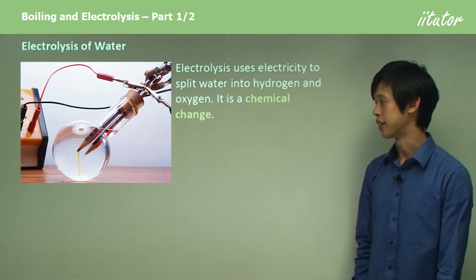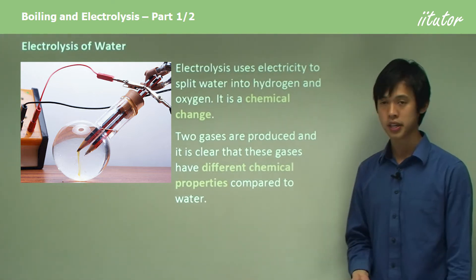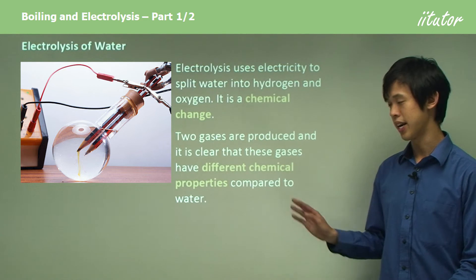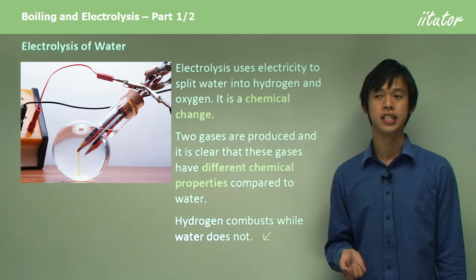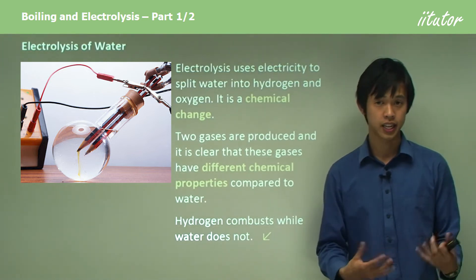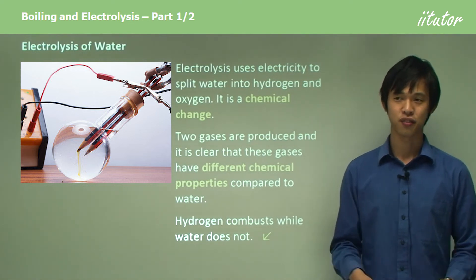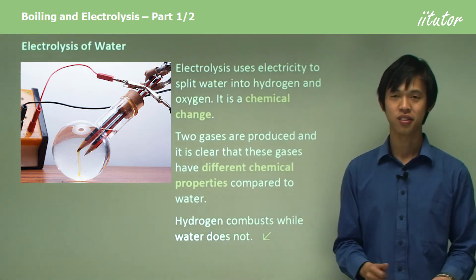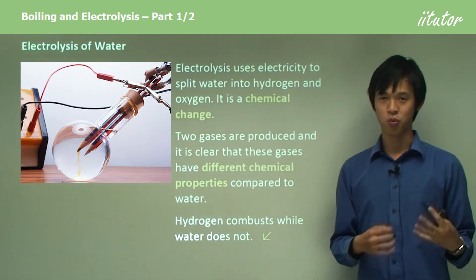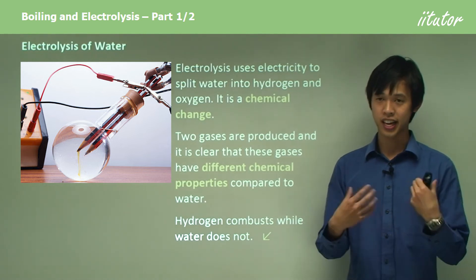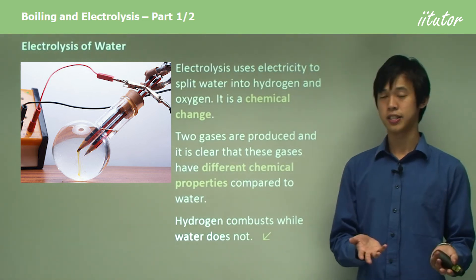This is definitely a chemical change. Two gases are produced and it's clear they have different chemical properties compared to water. If I try to light hydrogen on fire, I can do that very easily — that's one chemical property, it ignites very quickly. Now if I try to light water on fire, that kind of spits in the face of firefighting theory since the Middle Ages. Water has generally always put out fire — even Pokémon tells you that. So obviously the gas produced has very different properties to the substance we started with. That's a clear example.